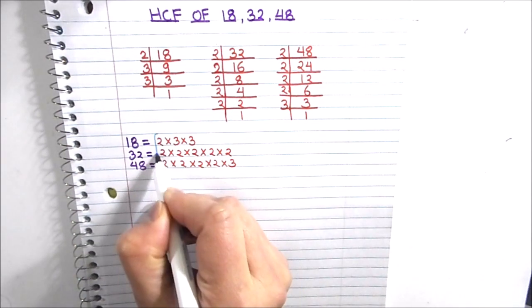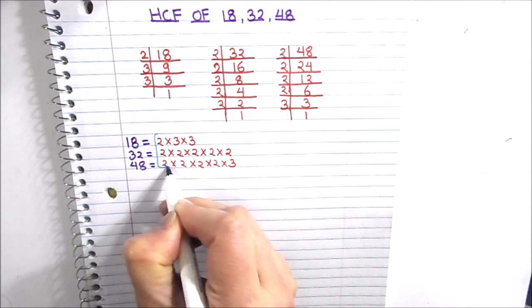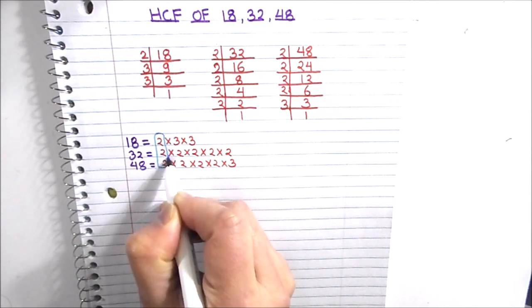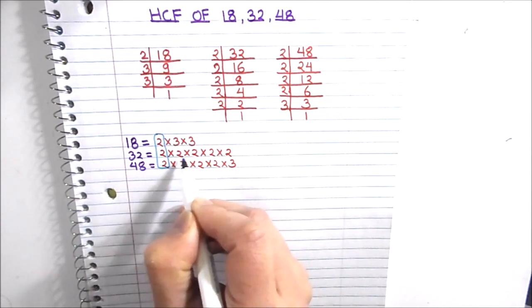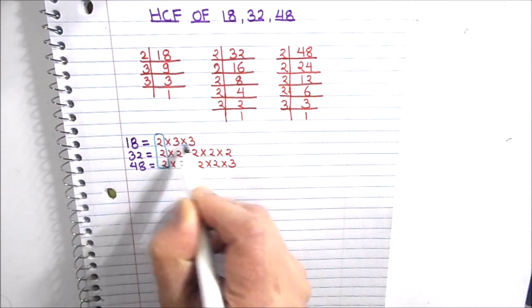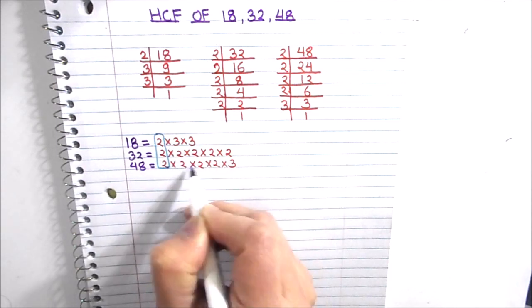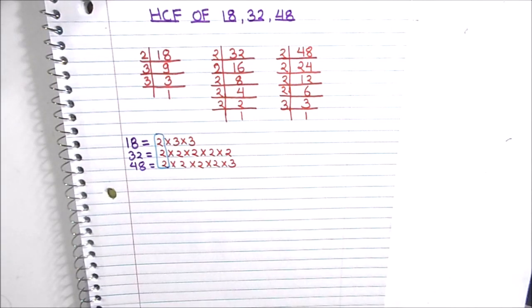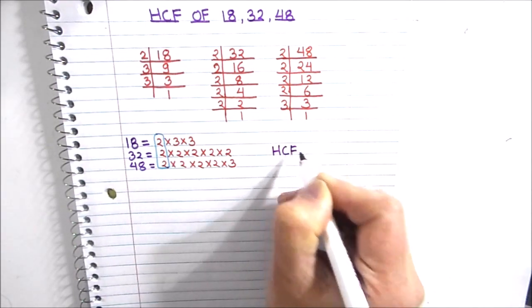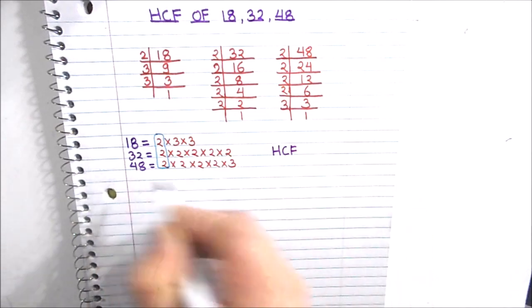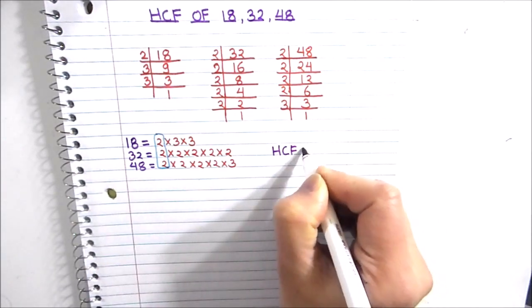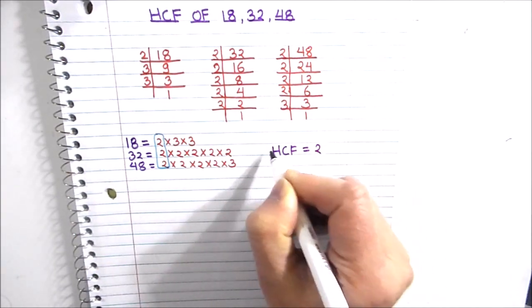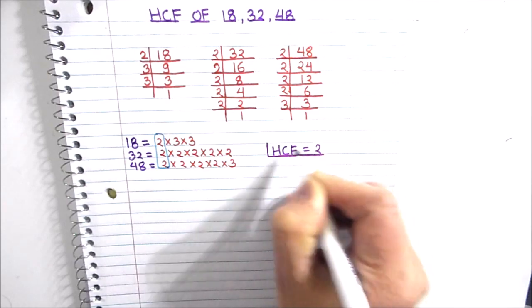Here we see that number 2 is common to all the three numbers, so we are going to circle 2. Next we will check 3. 3 is not common to all the three numbers, and that's all. So the only common number in between the three numbers is number 2. So the HCF of the three numbers is number 2.